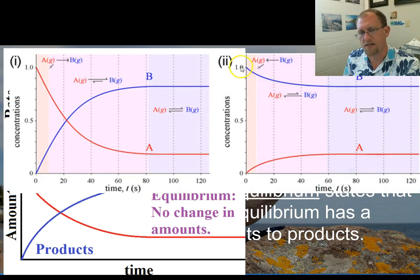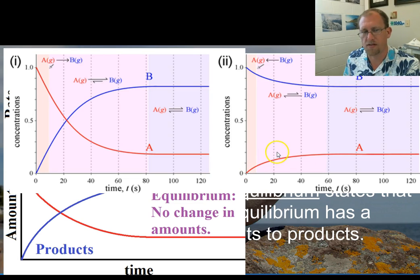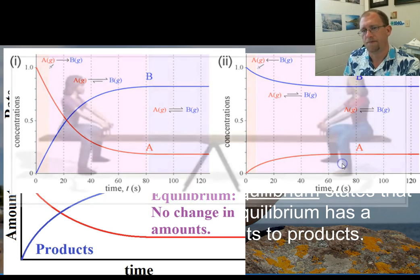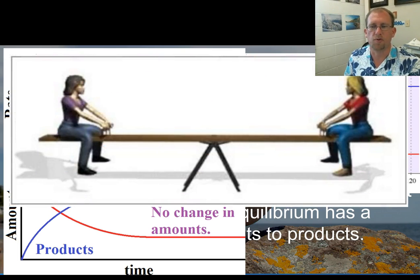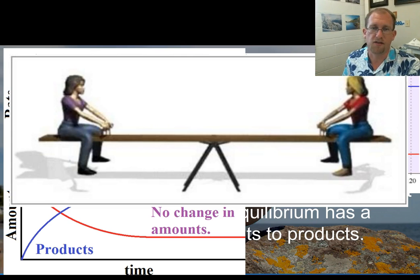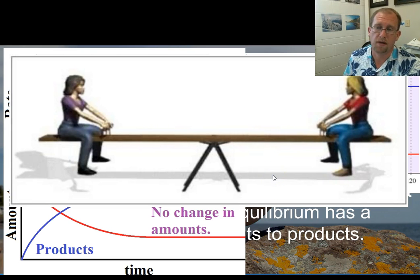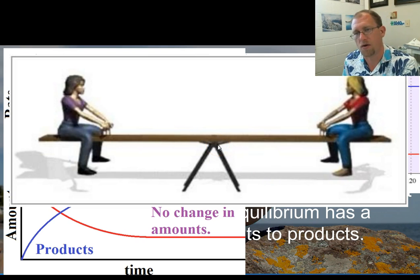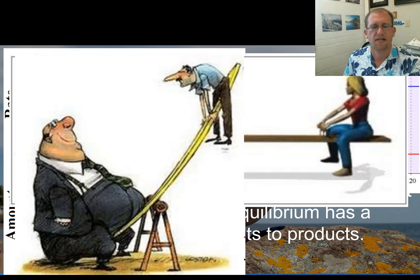Equilibrium comes when the forward and reverse reactions are balanced — they're both happening, but they're balanced. Here's an example where the reaction only goes a little ways. The reactants drop off in concentration but then stabilize, and the products pick up in concentration a little bit and then stabilize. The concentration of the reactants are always quite a lot larger than the concentration of the products. Equilibrium talks about how a forward reaction and a reverse reaction have reached this point of balance. Balance isn't always in the middle — sometimes it's reached far in one direction or the other.